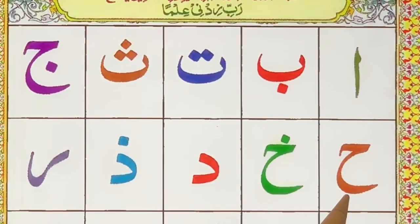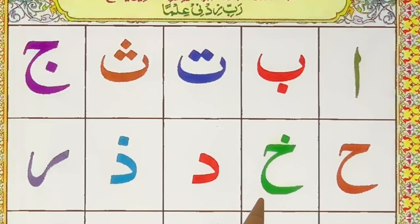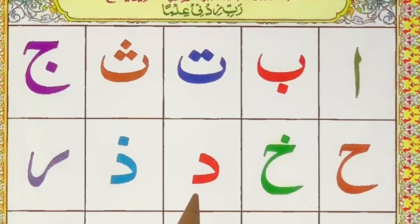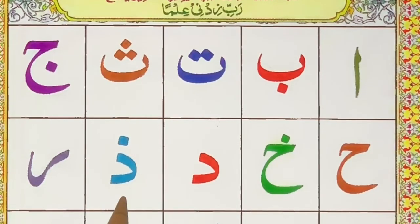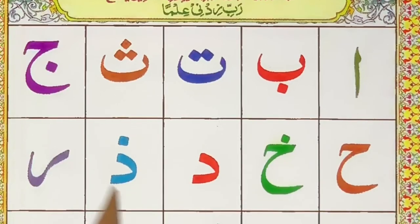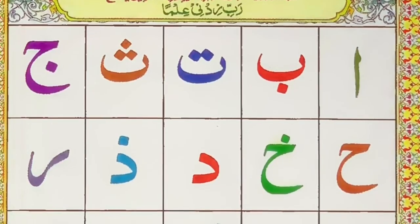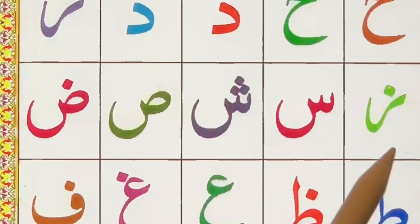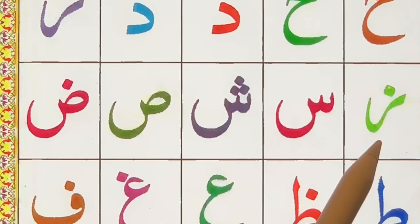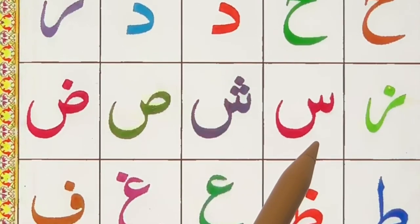Ha, ha. Kha, kha. Dal, dal. Dhal, dhal, dhal. Ra, ra. Zay, zay, zay.